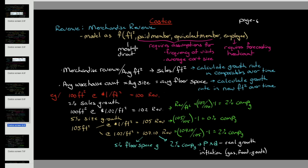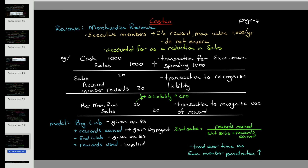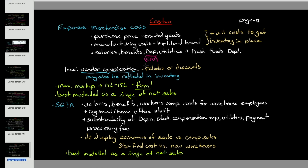You always want to get a good understanding of the business and its drivers before you go to a spreadsheet. You want to have an idea of the data you'd need. For example, if we're forecasting merchandise revenue, executive members get a 2% reward, so we have to figure out how much that 2% reward will come to because that's a liability. We have to first understand how the liability is created before we can begin to model it. Then we go into costs.